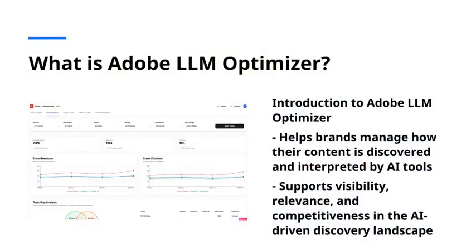Adobe LLM Optimizer is a standalone application that monitors and improves how your content appears in AI-generated results. It helps you discover what parts of your site are visible to AI tools, which content is being used, and how to optimize it further. The goal? More visibility, more engagement, and better business results in the age of generative AI.